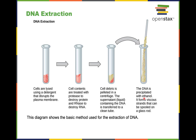Why does ethanol work? Well, it's because DNA stays in solution because of hydrogen bonding with water. Ethanol also does hydrogen bonding with water, because it has a lot of hydroxyl groups. So if you add an excess of ethanol, ethanol is going to compete with DNA for hydrogen bonding with water, and DNA comes out of solution, resulting in a viscous solution. These are the basic steps involved in isolating DNA from cells.